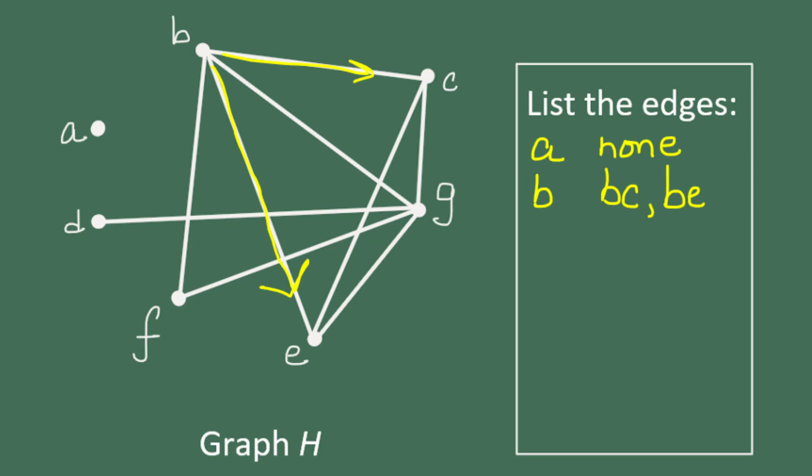In alphabetical order after E comes F. Is there an edge between B and F? Yes. So we're going to list BF. After that comes G. Is there an edge between B and G? Yes, there is. So I'm going to list that one. And that's the last vertex in our graph.